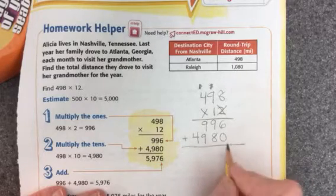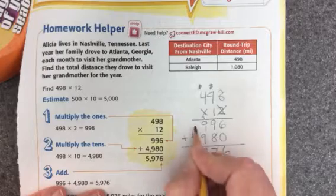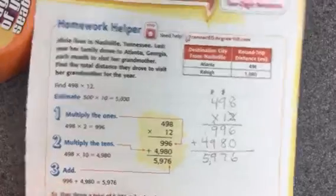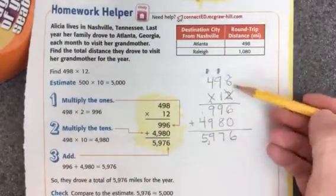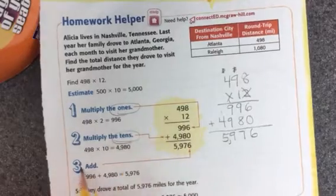Now I'm going to add these numbers together. And I have 5,976, and I'll put the comma in. So those are the steps. I multiply the ones, then I multiply the tens, and then I add.